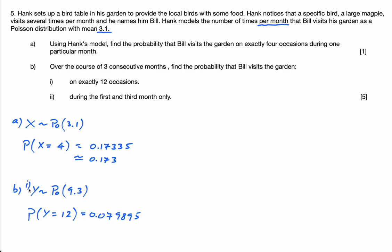And then B Part II. It says, find the probability that Bill visits the garden during the first and third month only. Okay, so that's the probability that, let's assume, let's look at the first month. If he visits, the probability that he visits the first month, he has to visit it at least once. So I have to do the probability that Y is greater or equal to 1. That's the first month.